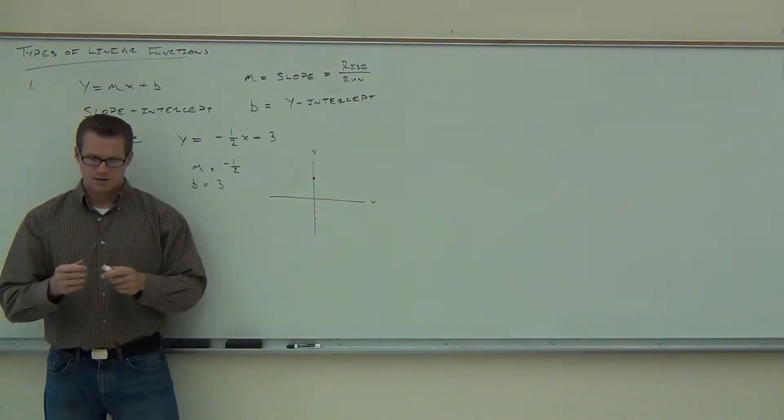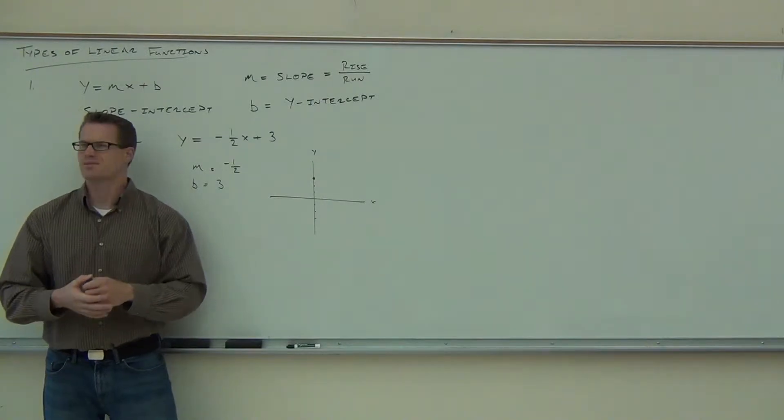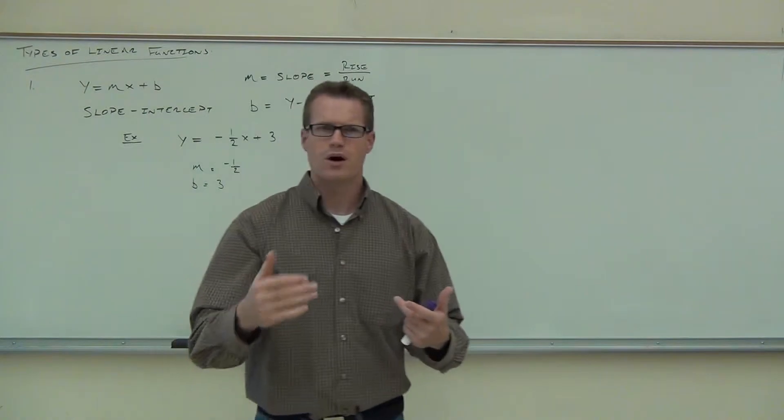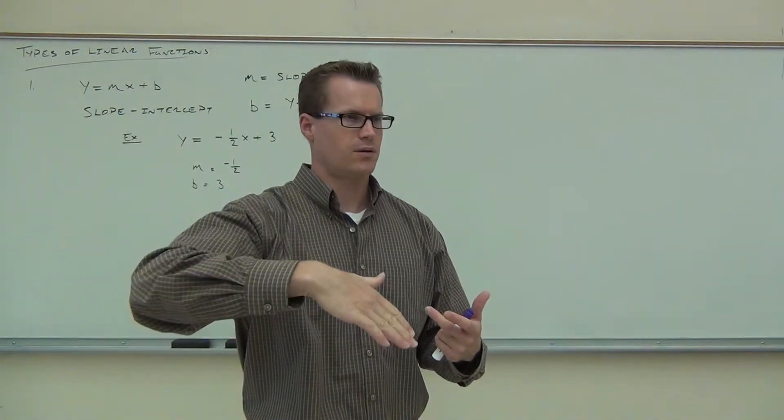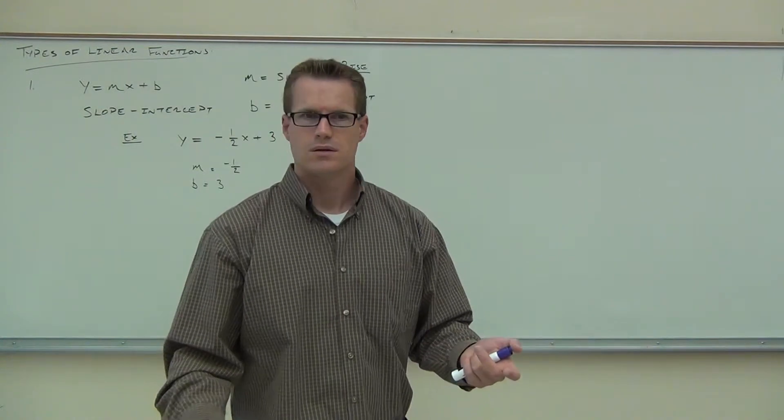Here's how you use your slope in conjunction with your y-intercept to graph your line. Now, our slope is negative one-half. Can you tell me what is the rise of this slope? Negative one. Wait a minute. The rise is negative one. If the rise is negative one, are we going up or are we going down? Down. Going down. What's the run? The run is two.